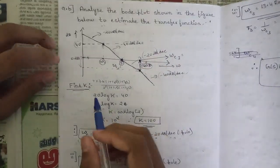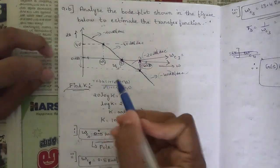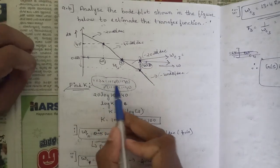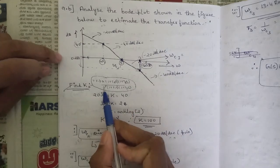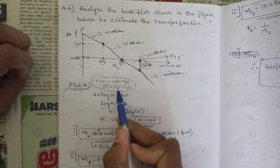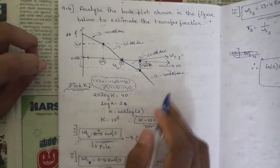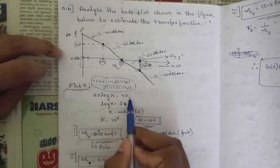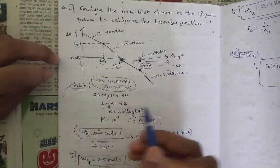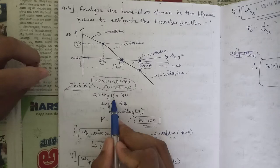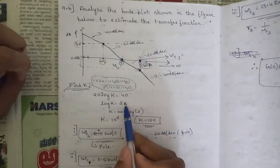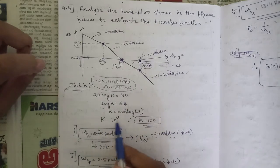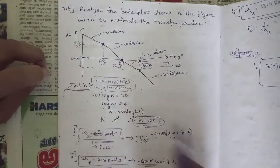To estimate the transfer function, first we find the value of K. The general form is K times (1 + T_a*s)(1 + T_b*s)... divided by s^j times (1 + T1*s)(1 + T2*s)... Since the 40 dB reference line is given, we set 20*log(K) = 40. So log(K) = 2, giving K = antilog(2) = 10^2 = 100.